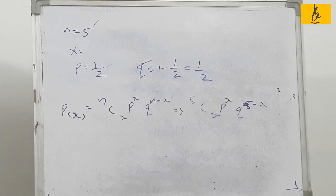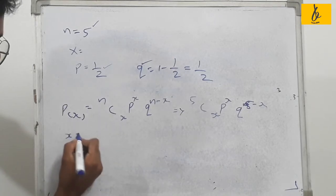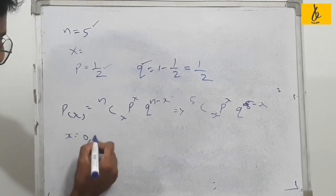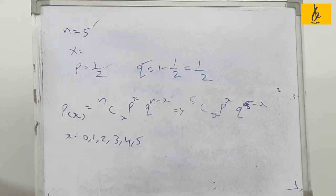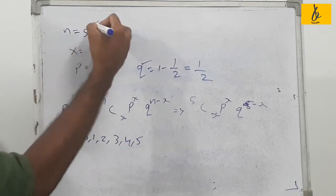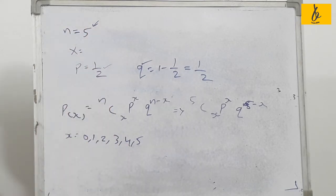The value of x can take the values 0, 1, 2, 3, 4, and 5. These are all the possible values of x for this distribution.